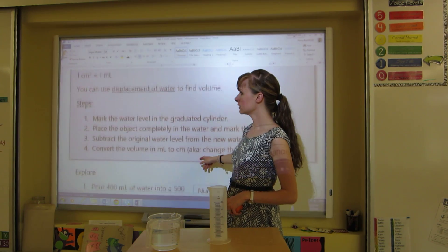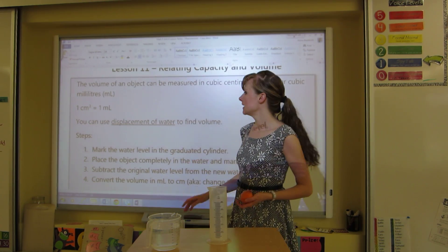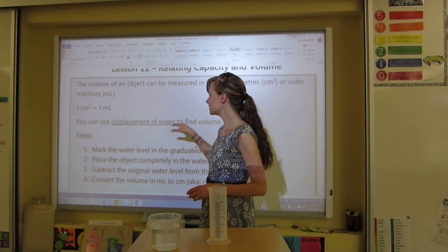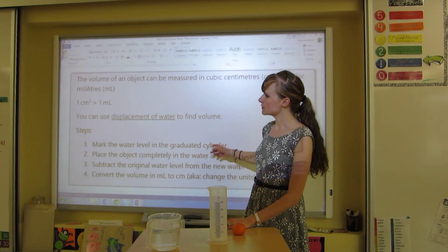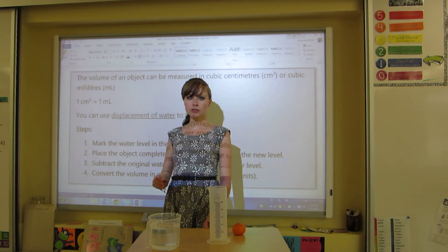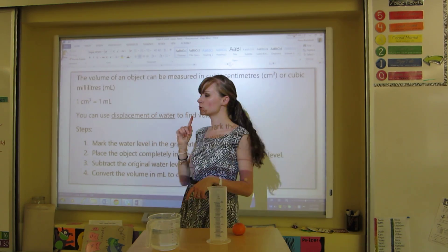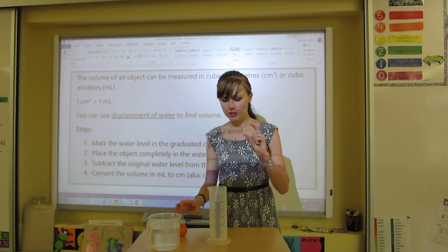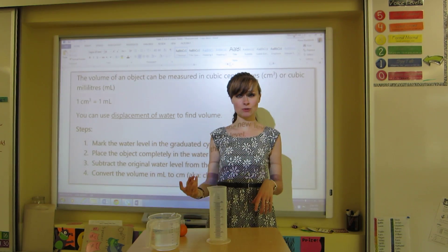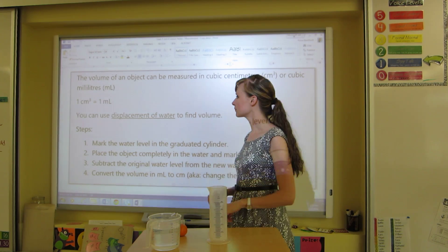So what we learned in this lesson is that you can use displacement of water to find volume. Because we know that one centimeter cubed, so those little cubes, is equal to one milliliter. So if I find that an object is two milliliters, then it's going to be two centimeters cubed.